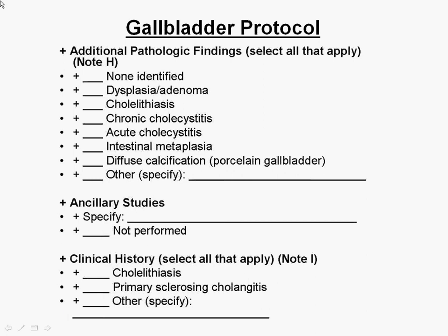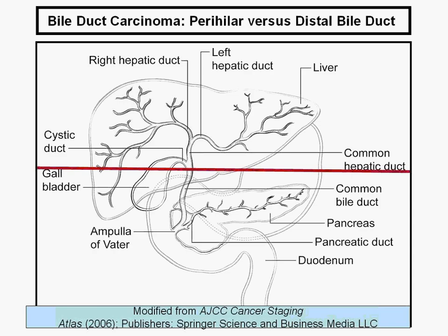The other parts of the gallbladder checklist include cholecystitis, stones, and other findings, which all have to be entered. Overall, the gallbladder checklist is fairly straightforward, with just a few things that one needs to pay attention to.